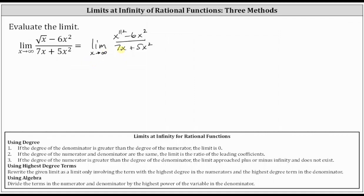Let's first determine the limit by using degree. And again, even though the numerator is not a polynomial, we can still use the idea of identifying the highest power on the variable. In the numerator, the highest power in x is two. In the denominator, the highest power in x is also two. Therefore, we can treat this as if the degree of the numerator and denominator are the same. Referring to our notes, if the degrees are equal, the limit is the ratio of the leading coefficients, which in this case is negative 6 divided by 5, or negative 6 fifths.